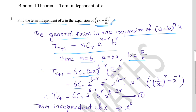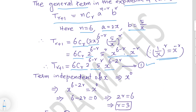Collect all constants together, then x terms together. 6Cr is a constant. (2x)^(6−r) splits into 2^(6−r) and x^(6−r). From (5/x)^r, the constant is 5^r and the x part is x^(−r). Combining x terms: x^(6−r) · x^(−r) = x^(6−2r). So equation 1 is: T(r+1) = 6Cr · 2^(6−r) · 5^r · x^(6−2r).